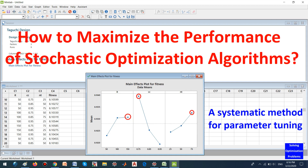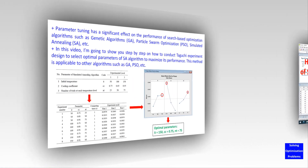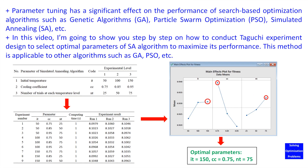How to maximize the performance of Stochastic Optimization Algorithms: a systematic method for parameter tuning. Parameter tuning has a significant effect on the performance of search-based optimization algorithms, such as genetic algorithms (GA), particle swarm optimization (PSO), simulated annealing (SA), etc.